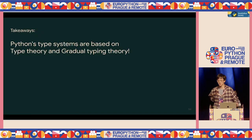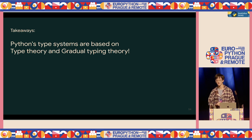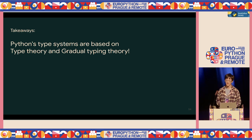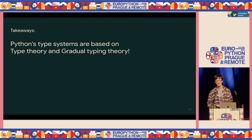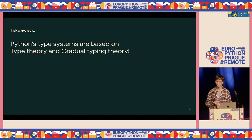So we've covered type theory for about 25 minutes. We know that Python's type system is based on type theory, and that annotation-based typing is something that doesn't always have a solid mathematical theory behind it.